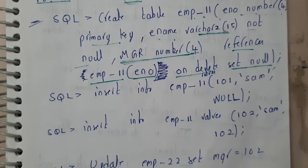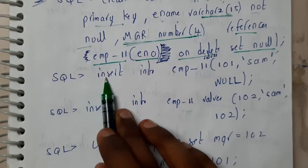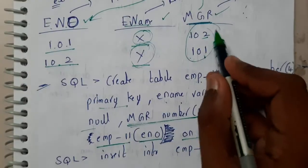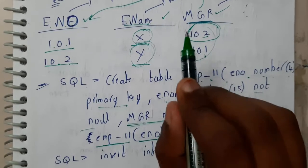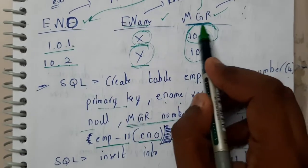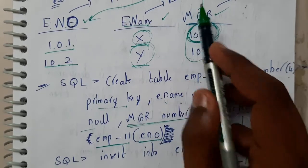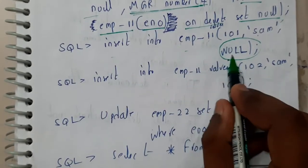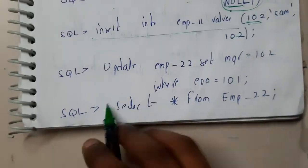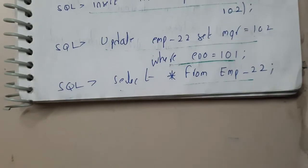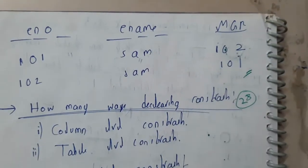Now we are inserting values: INSERT INTO emp 101, Sam, NULL. The reason we insert NULL here is that initially when inserting the first record 101, there are no previous records, so you cannot set manager_id as 102 — it would give a constraint violated error. So we insert NULL initially, then insert record 102, and then update 102's manager_id to employee 101. When you SELECT, you'll get the required output.